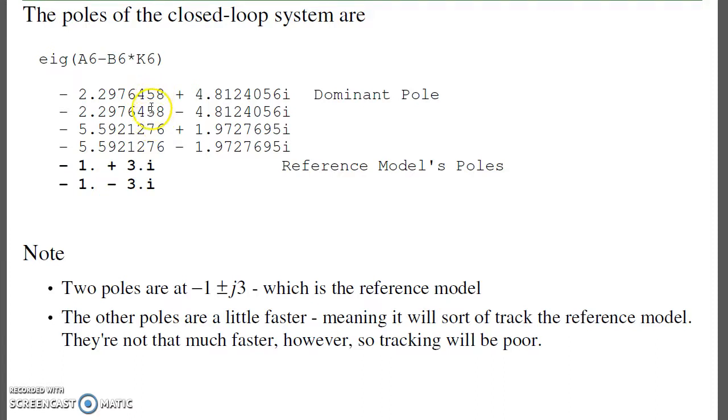There's the dominant pole of the plant. These are a little bit faster. If these are arbitrarily fast, I'll then track the set point, the reference model. These aren't that much faster than the reference model, so the tracking may not be that good.